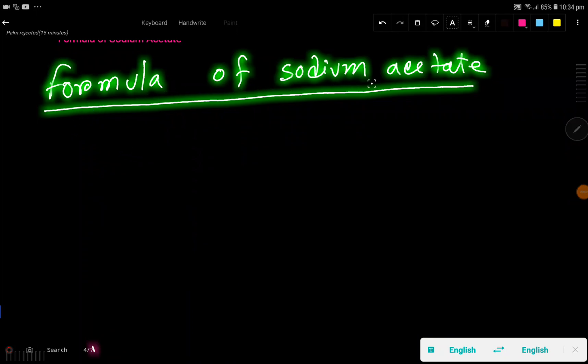The formula of sodium acetate - that is, the chemical formula of sodium acetate or how to write the formula of sodium acetate. Let's get started. Sodium, you know that sodium is an element of group 1A, so it will have a positive charge. This is a metal.